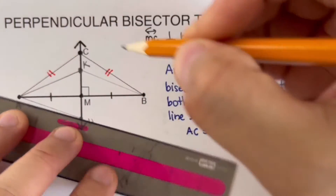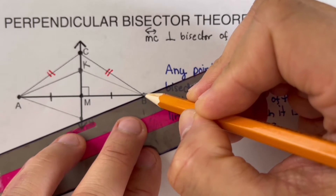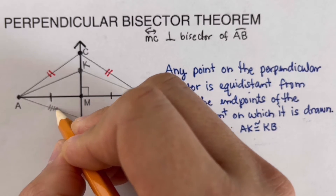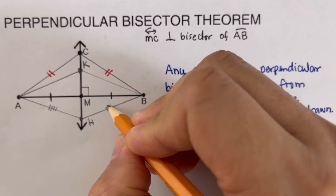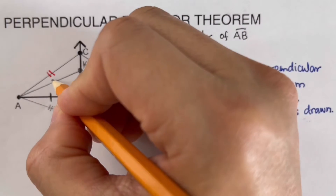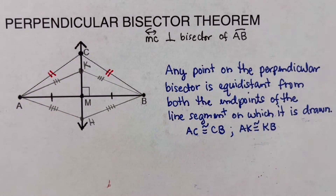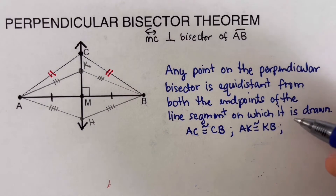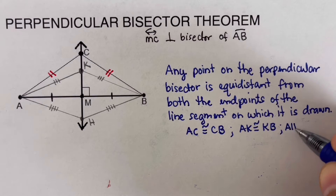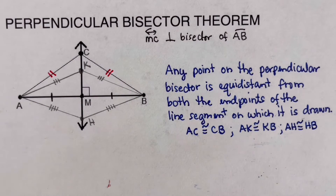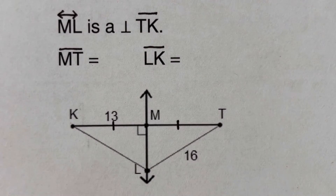Similarly, if we add another point H on the bisector and connect it to A and B, then AH is congruent to HB. This is what we mean by the perpendicular bisector theorem.